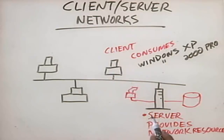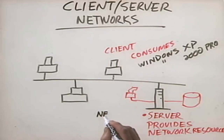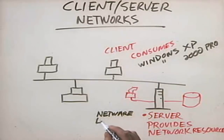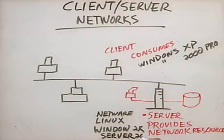Those are client workstation operating systems. The server, on the other hand, has special optimized operating systems. These operating systems aren't designed for client-type tasks such as word processing and spreadsheets — that's not their main job. For example, server operating systems include NetWare, Linux, Windows 2000 Server, and Windows Server 2003.